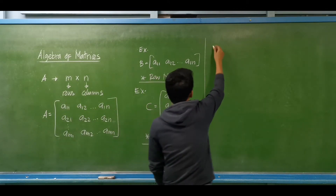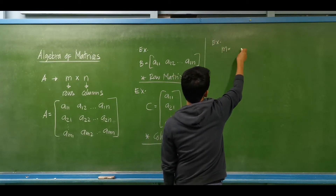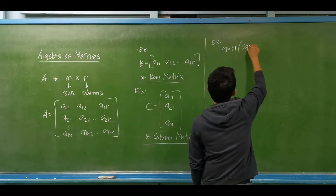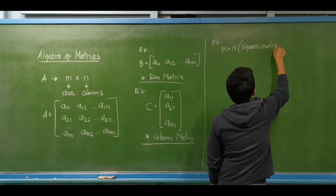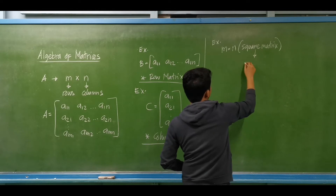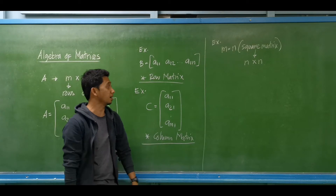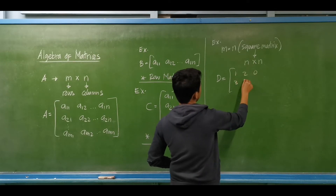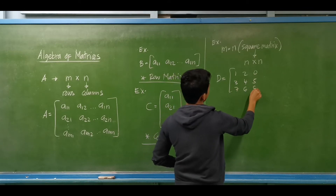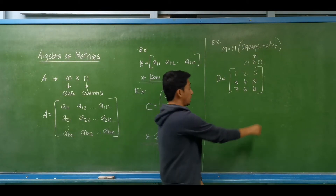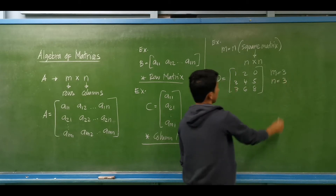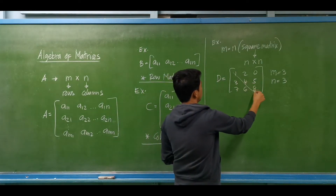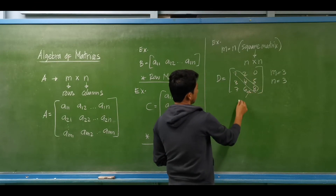If the number of rows is equal to the number of columns for a matrix, this is an example of a square matrix. For a square matrix, the dimension can be expressed as m by n since m is equal to n. For example, matrix D has elements 1, 2, 0, 3, 4, 5, 7, 6, and 8. The number of rows equals 3 and the number of columns also equals 3, so this is a square matrix. The diagonal elements are 1, 4, and 8.